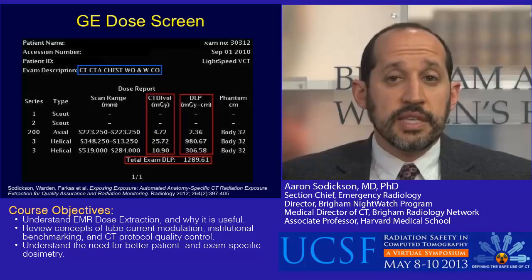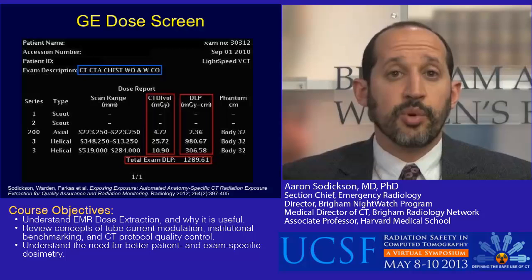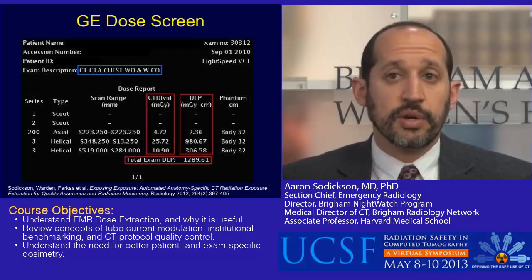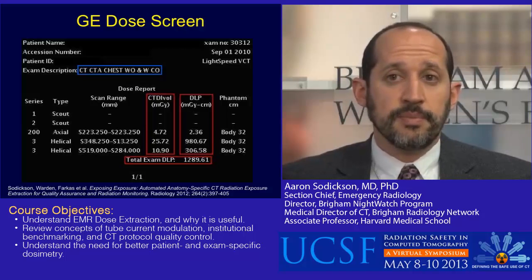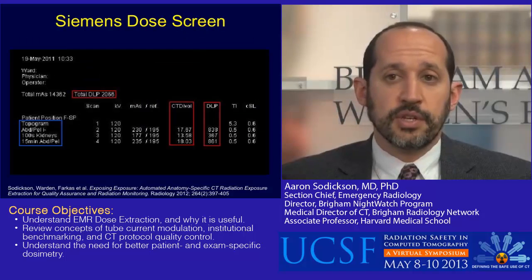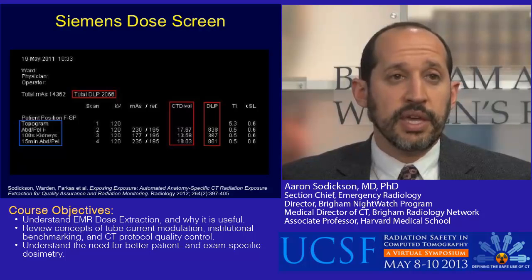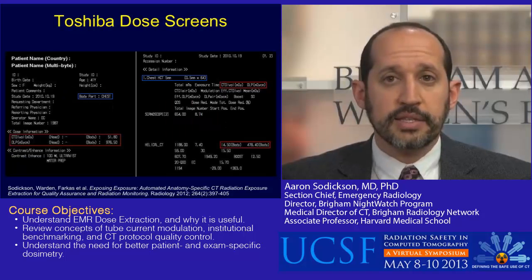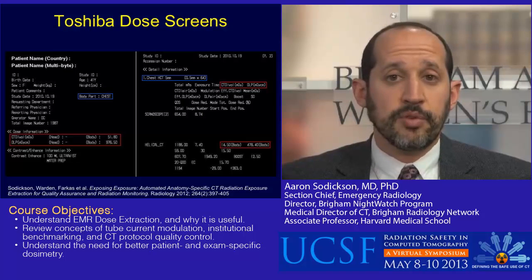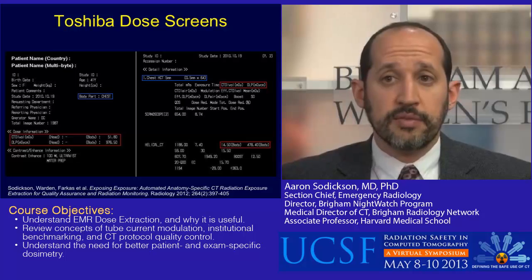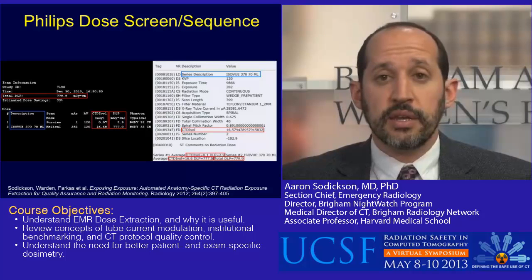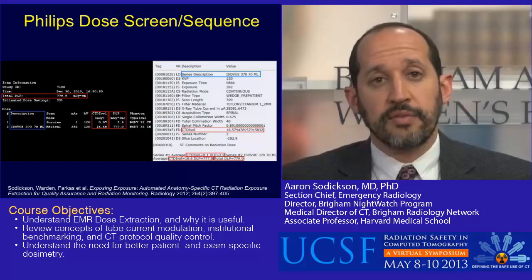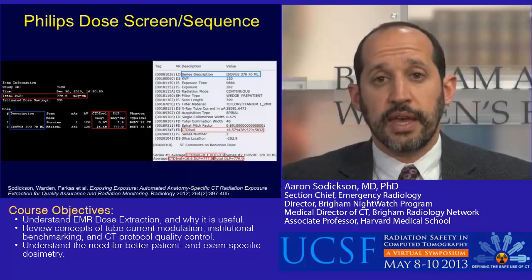All of the CT manufacturers produce dose screens where, for each portion of the scan, you can see a recorded CTDI vol and DLP. This is the GE version. Here's the Siemens version, with CTDI vol and DLP shown in the red boxes. This is the Toshiba version laid out differently, but all the information is there in red. And here's the Philips screen — again, CTDI vol and DLP for each portion of the scan.